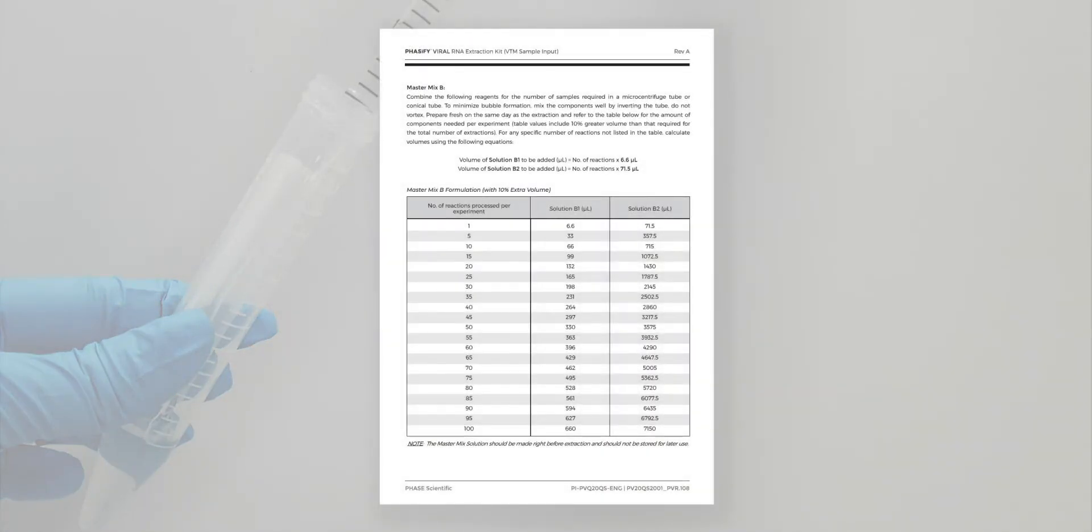Next, prepare Master Mix B by adding solution B1 and solution B2 into a microcentrifuge or conical tube. Please check the Master Mix B formulation table found inside the kit to determine the exact volume of reagent you should add depending on how many samples you intend to process.